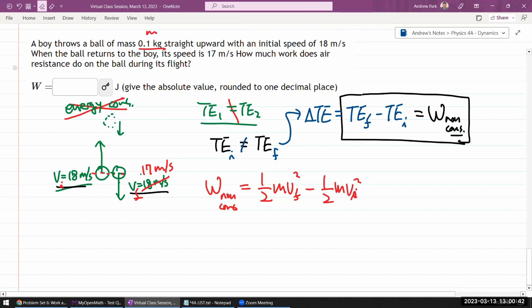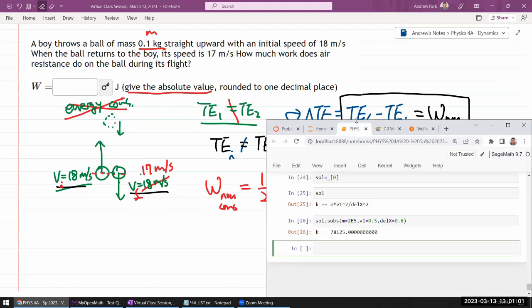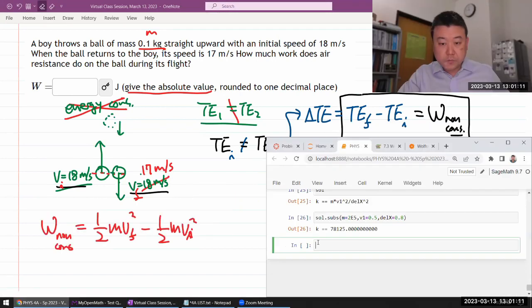I think I have all the numbers. I have the mass. It says give the absolute value, so I'll just ignore—I think we're going to end up being negative but I'm gonna ignore the negative side. Okay, so let's plug in all the numbers into my calculator and see where we go.